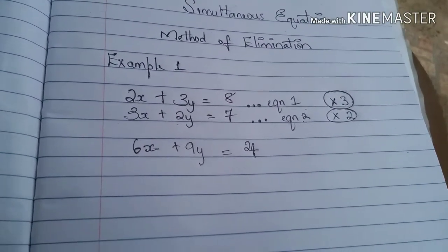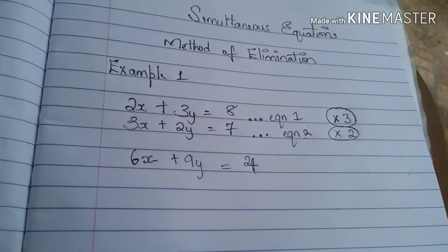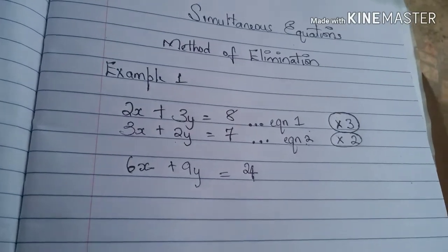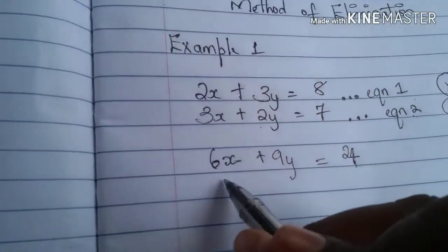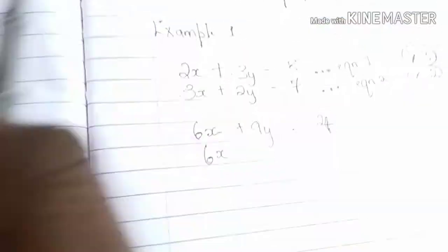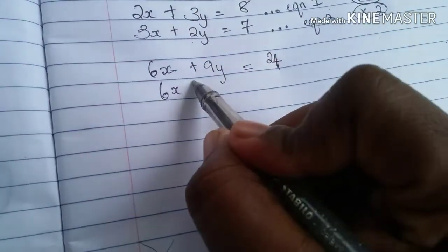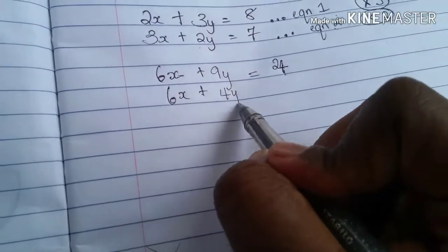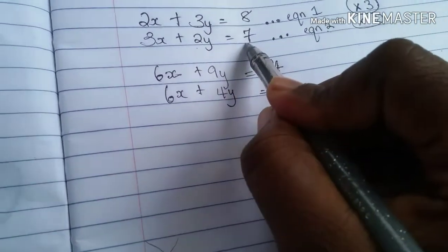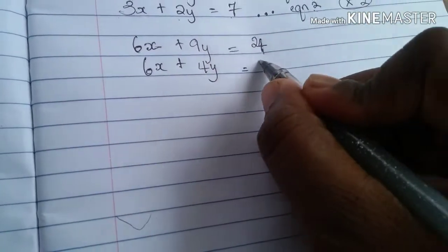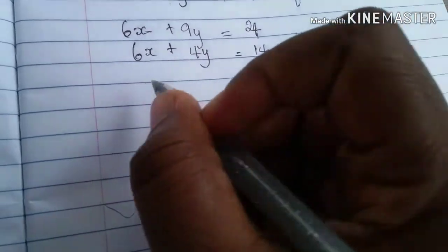So when we multiply equation 2 by 2, we will now have 2 times 3x which gives us 6x. 2 times 2y which gives us 4y. And 2 times 7 which gives us 14. Alright?